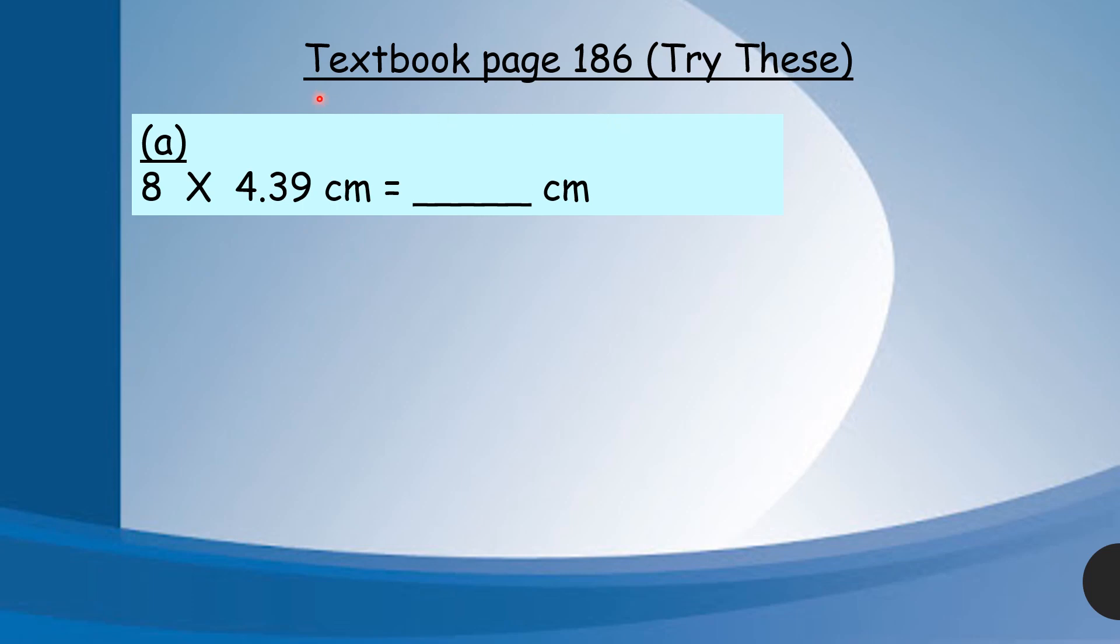This is question 1a. For questions like this, the first thing you need to do is check the unit. For this one, both are in cm and the answer is also in cm, so we just multiply as usual. You do like this: 4.39 cm times 8. After multiplying, your answer will be in cm also.